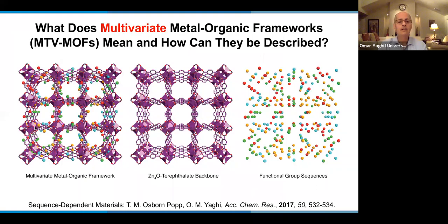So what does multivariation mean? This illustration here shows, I think, very well, how one can tell if they have a multivariable system. Here is my MTV MOF. And the best way to describe the multivariation is to separate the backbone from the disorder or from the functionalities that are covalently attached to that backbone. So it's an integral part of the backbone, but I can separate, at least conceptually, the functionalities from the backbone.